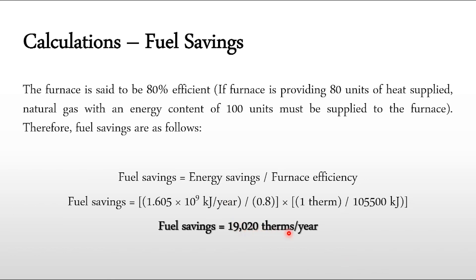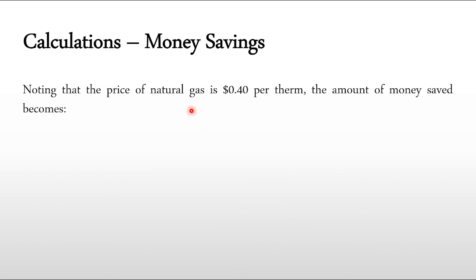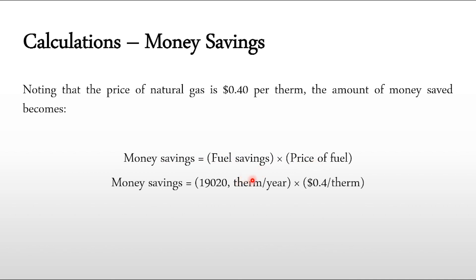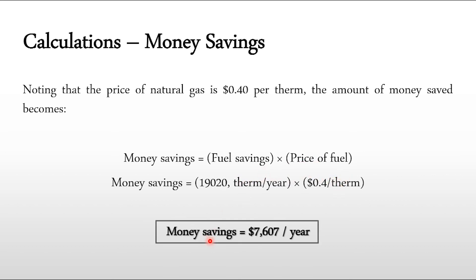That is a significant amount of fuel recovered that was previously wasted. Finally, the money savings: with natural gas priced at $0.4 per therm, money savings = fuel savings × price of fuel = 19,020 therms/yr × $0.4/therm. The therms cancel and we get a money saving of $7,607 per year.